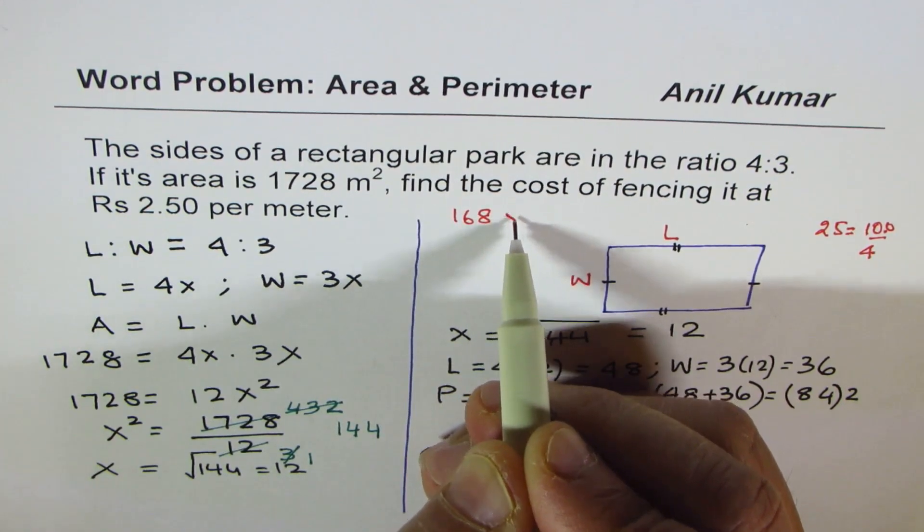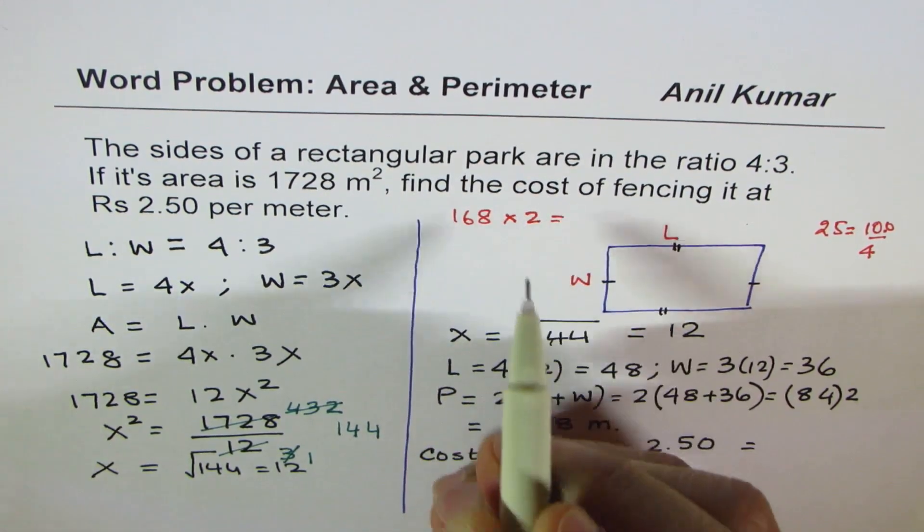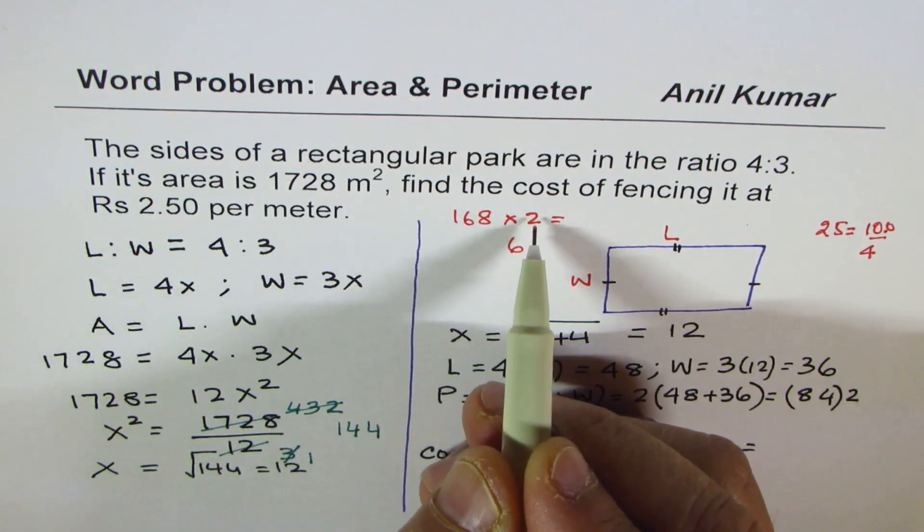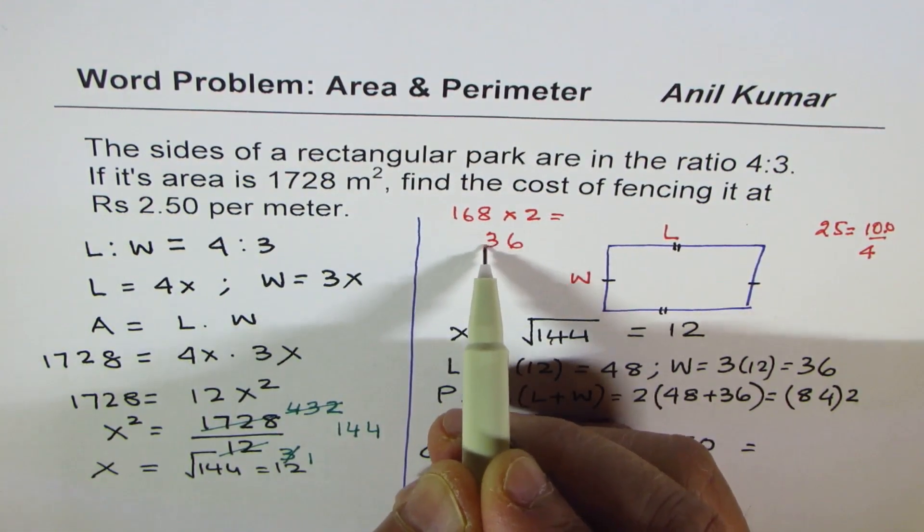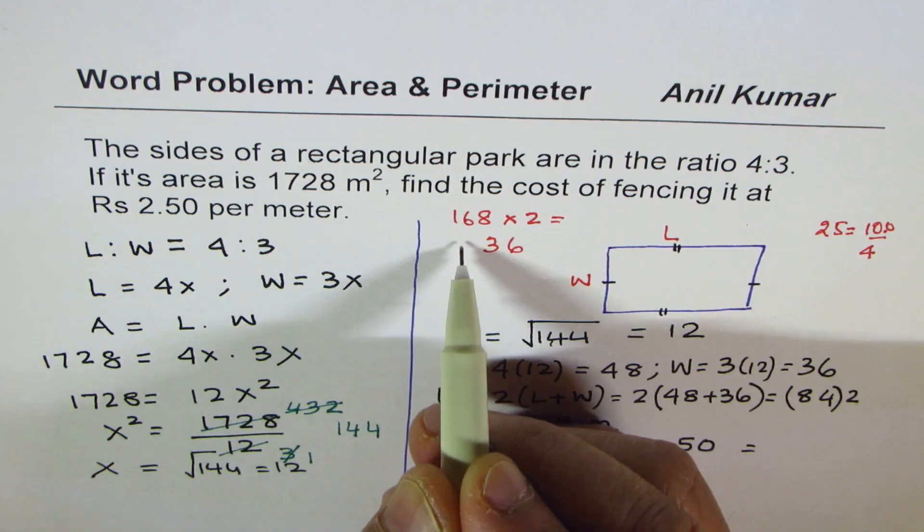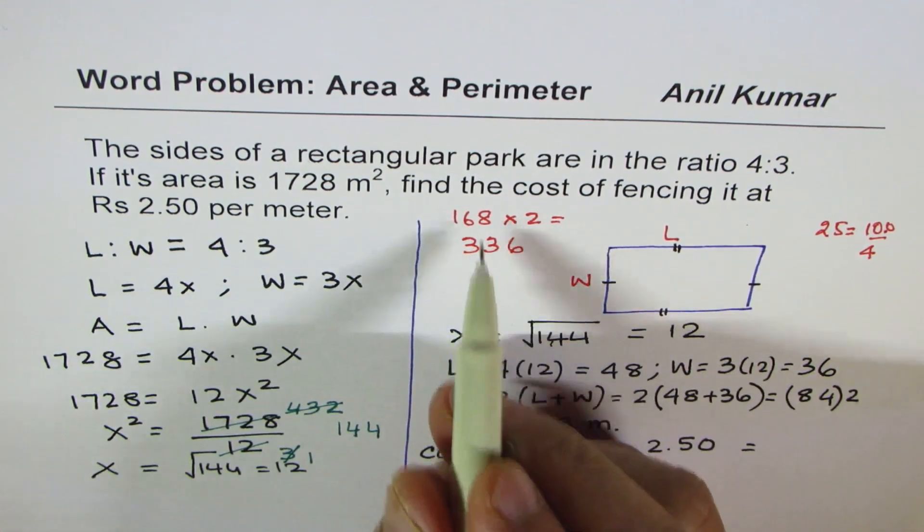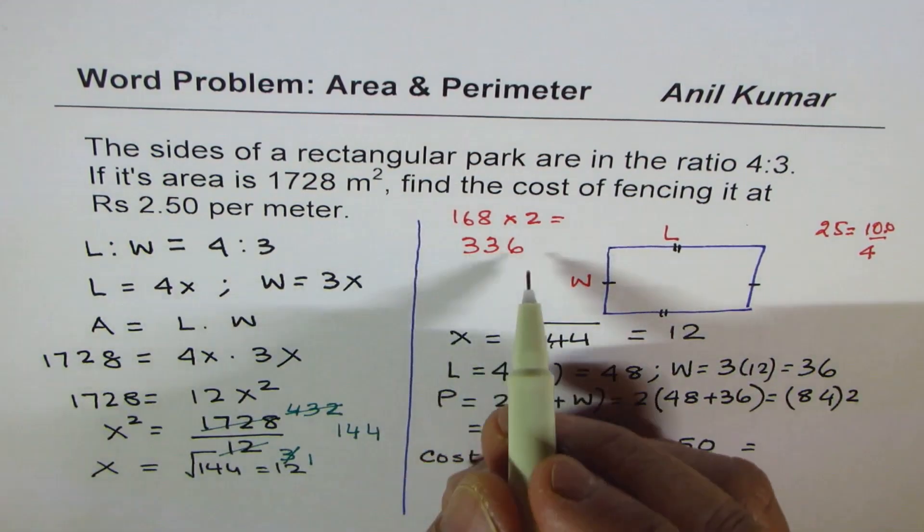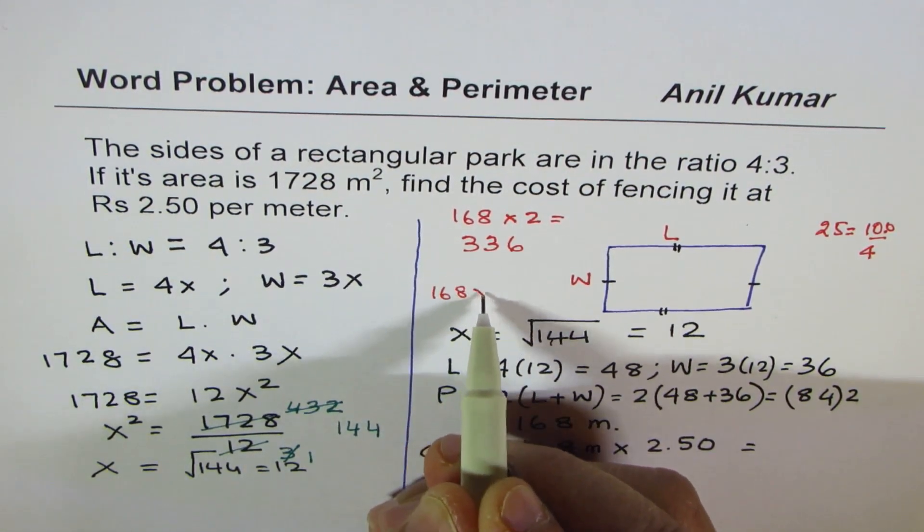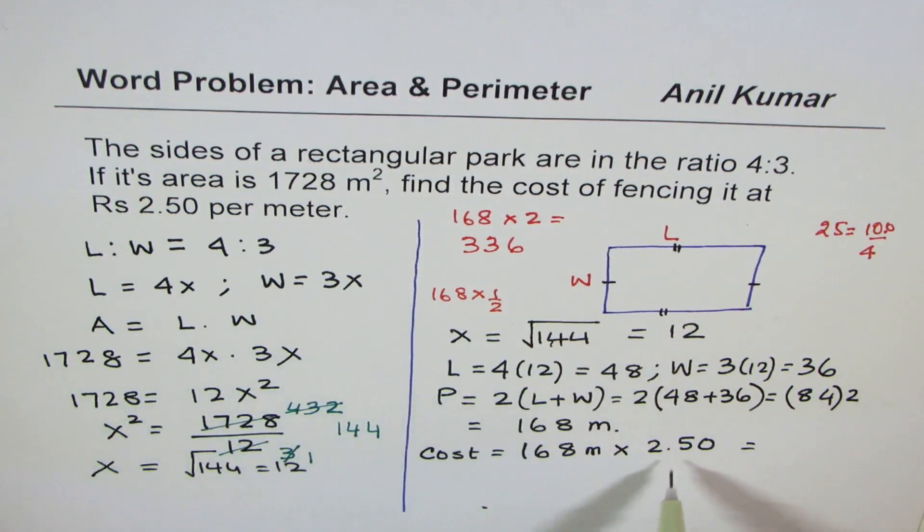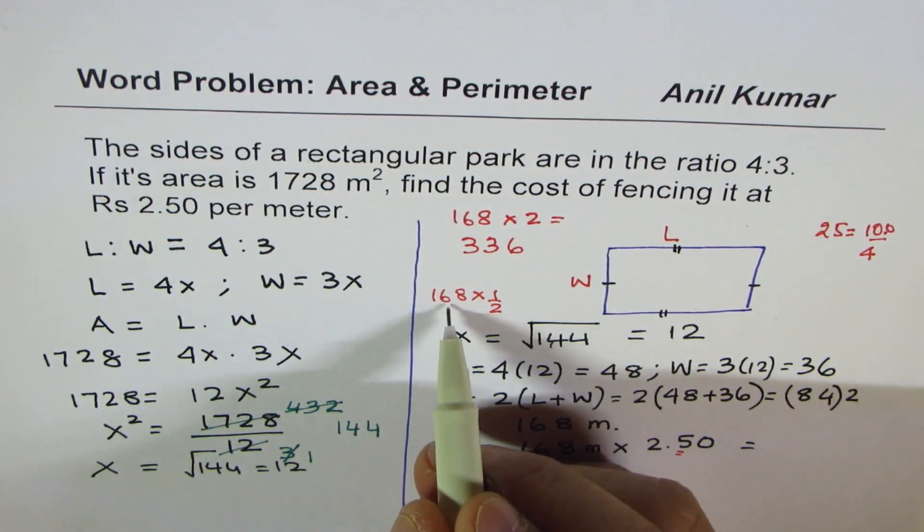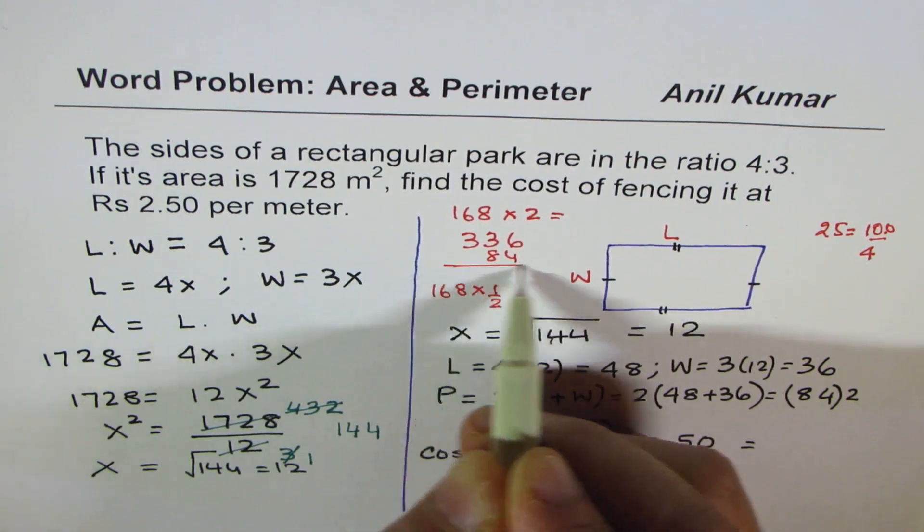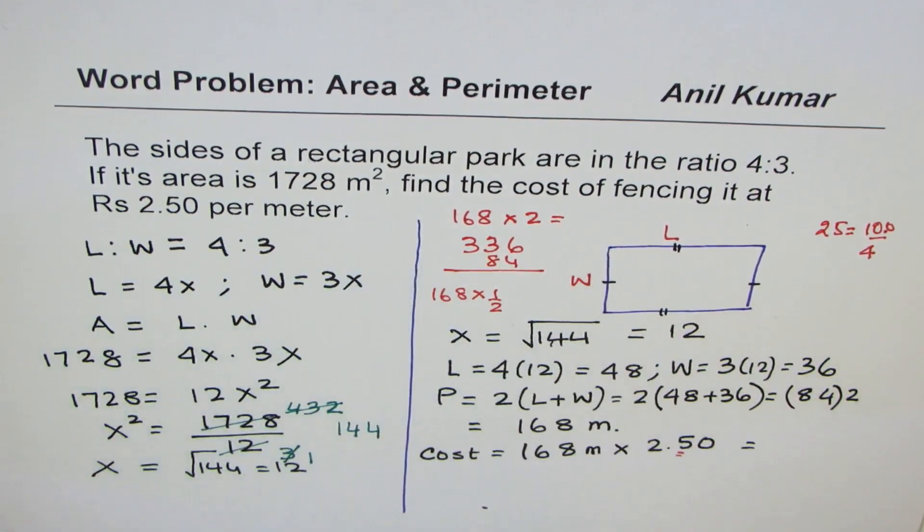We have 168 times 2, which is 2, 8, 16, 6, 1, 2, 6, 12, and 1, 13, 3, 1, 2, 1, 2, and 1, 3. This is 336, twice. And 0.5 means half. So when we do 168 times half, half of this is 84. So when you add this up, you get your result.